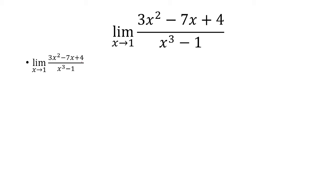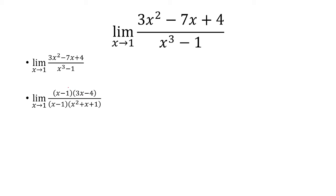Next one: if I plug in x equals 1, I get 0 over 0, so I'm going to factor this out. The numerator factors into x minus 1 times 3x minus 4. The denominator is a difference of two cubes, so that's x minus 1 times x squared plus x plus 1. If I plug in x equals 1, I get negative 1 third.